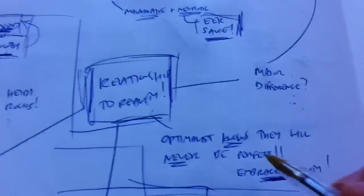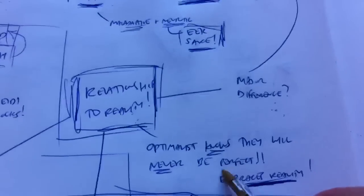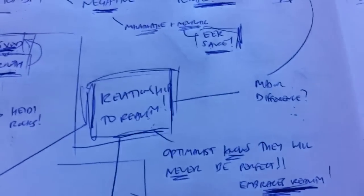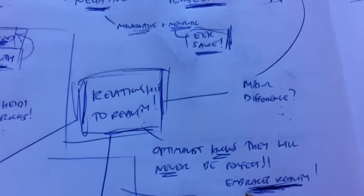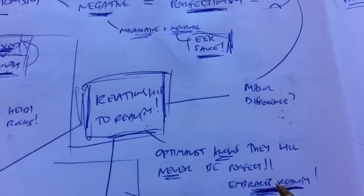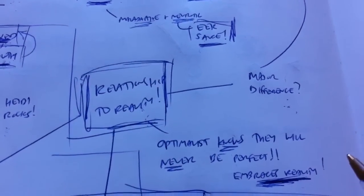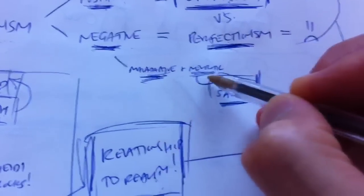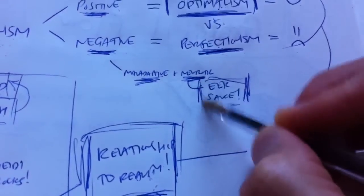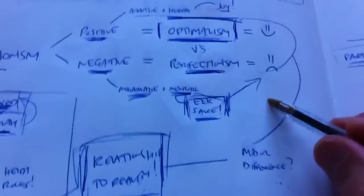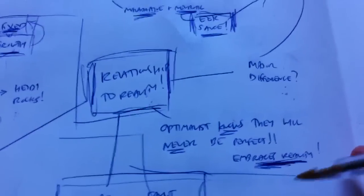Optimalists embrace reality. They know they will never be perfect. They embrace reality. They know there are constraints to reality. The perfectionist, on the other hand, fails to embrace reality. They live in this naive, idealistic sense where they actually think that they're going to be perfect someday. Well, that's a good way to be maladaptive and neurotic and experience the dreaded eek sauce. Turn that frown upside down by embracing reality.